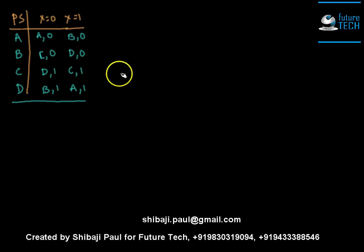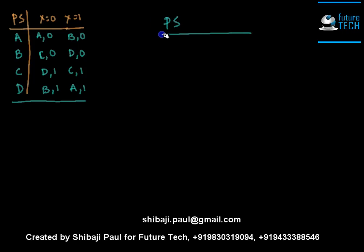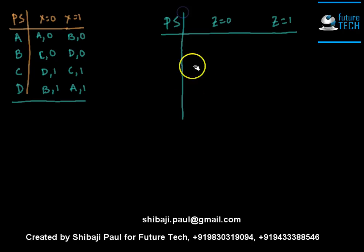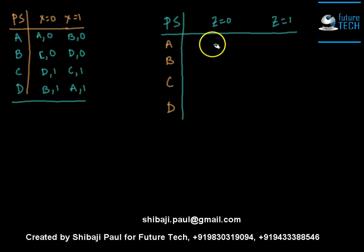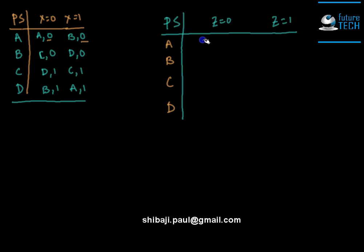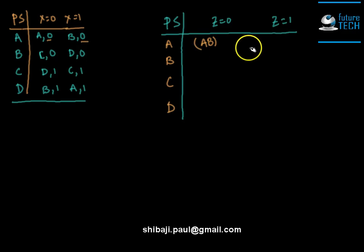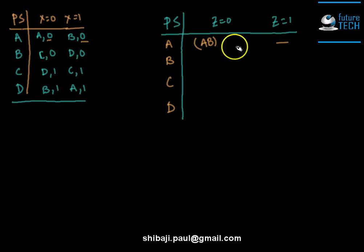We already know how to test this using a testing table and testing graph. The output alphabet contains 0 and 1, so the testing table will have two columns — one for 0 and one for 1. The upper half of the testing table contains the given states: A, B, C, D. We find the implied states for corresponding outputs. For state A, both transitions produce output 0, so under z=0 we get both A and B, and under z=1 we get nothing.